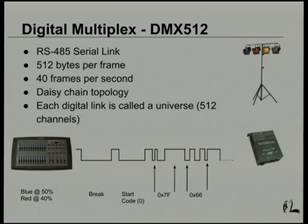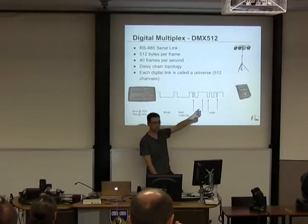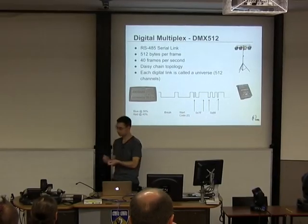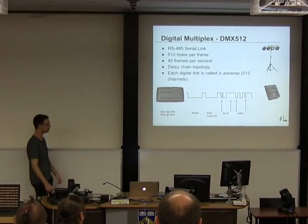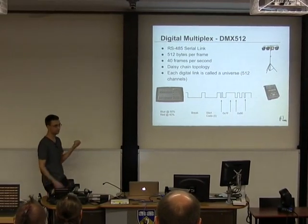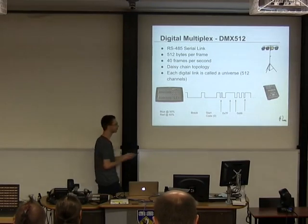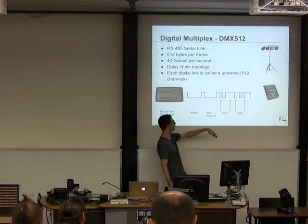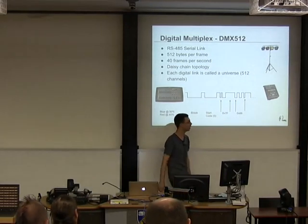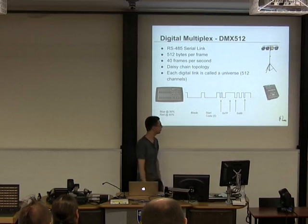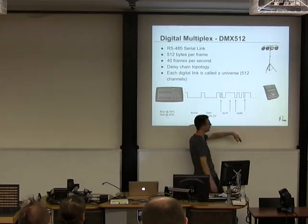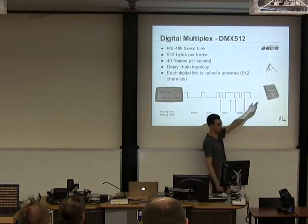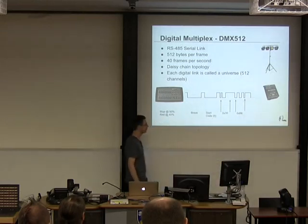The important bit is that devices on the end of these chains have start addresses, normally set by little dip switches — some newer devices have an LCD panel. That tells the device the first channel of data it should listen to. In our example, start address is 1. If you had multiple devices, the first would have start address 1, the second start address 5, and so on. You can chain devices together like that.